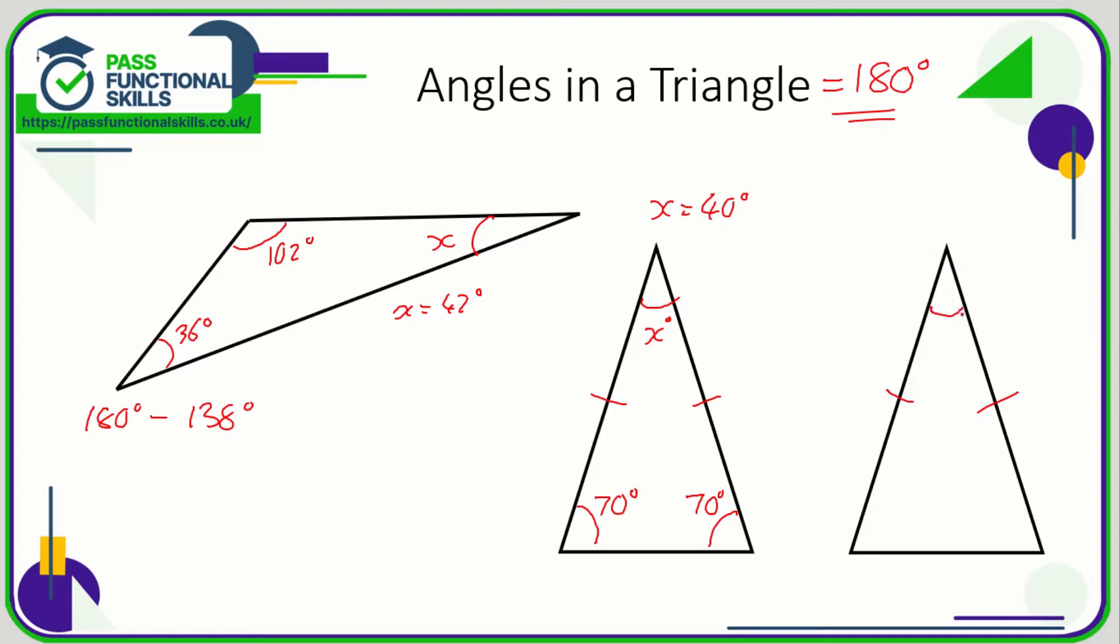You could be just given this angle here which is 50 degrees and you need to work out one of the angles at the bottom. Again it looks impossible but remember that this angle here is exactly the same as this angle here. So this angle here is also x degrees.